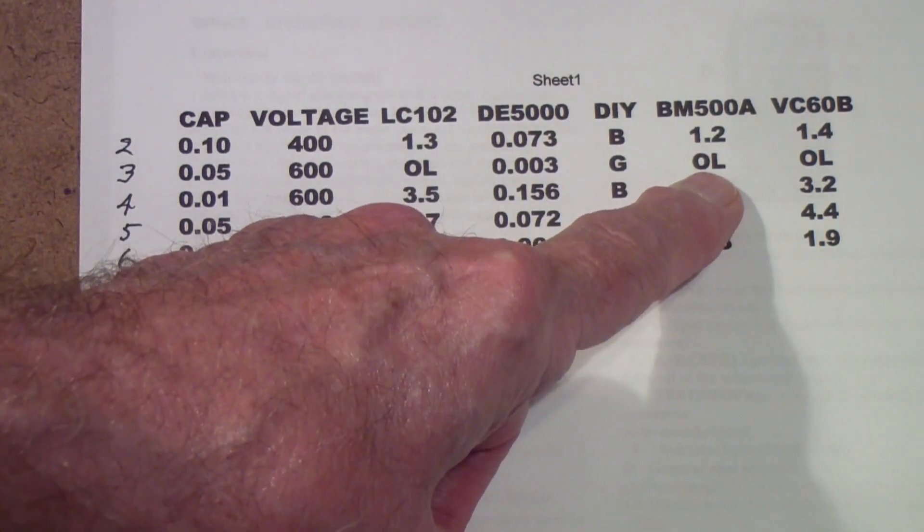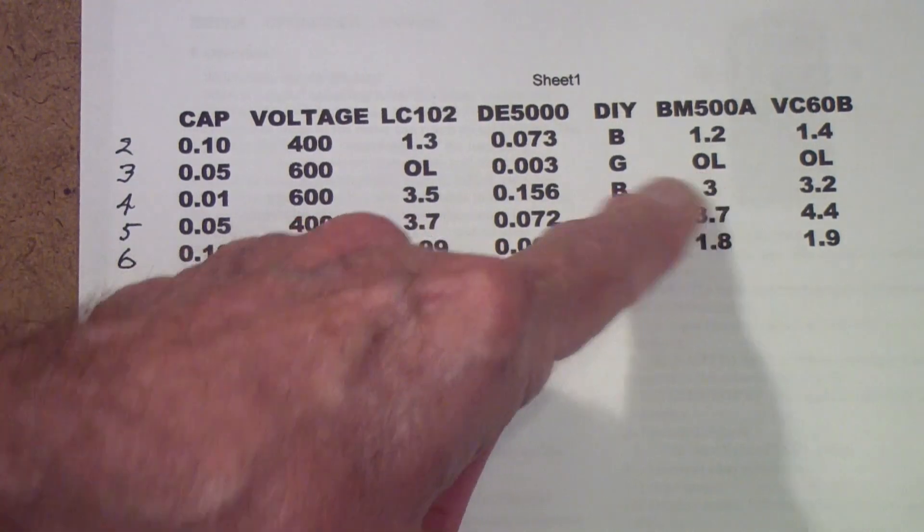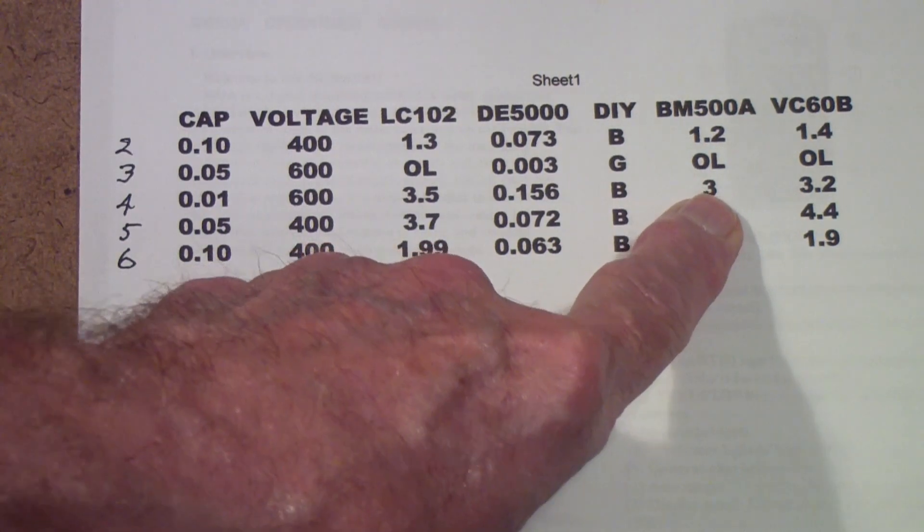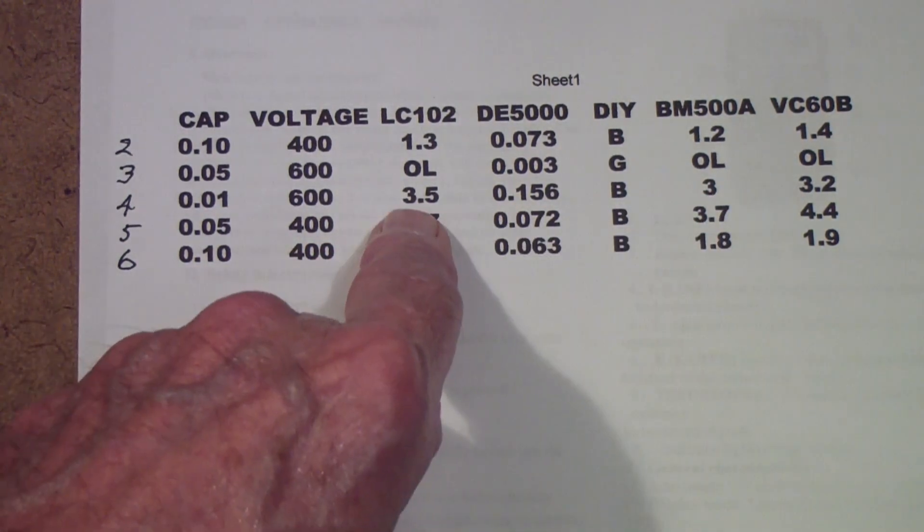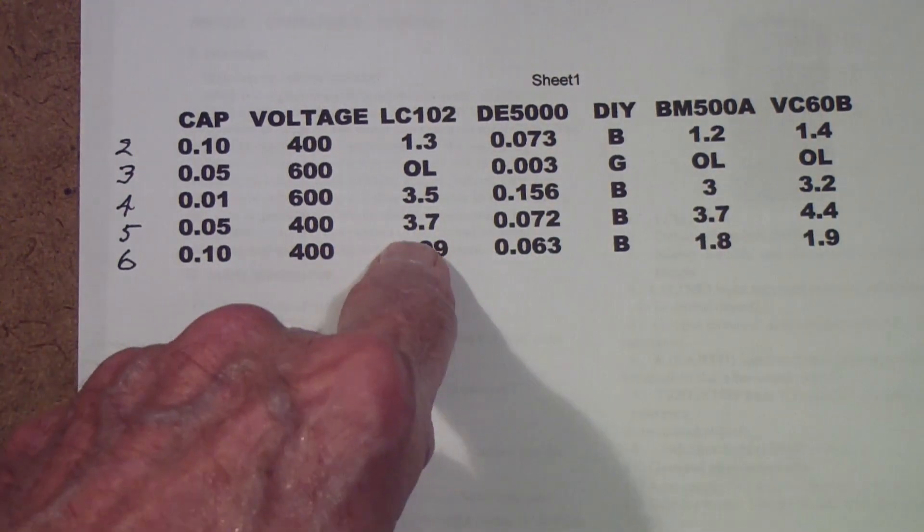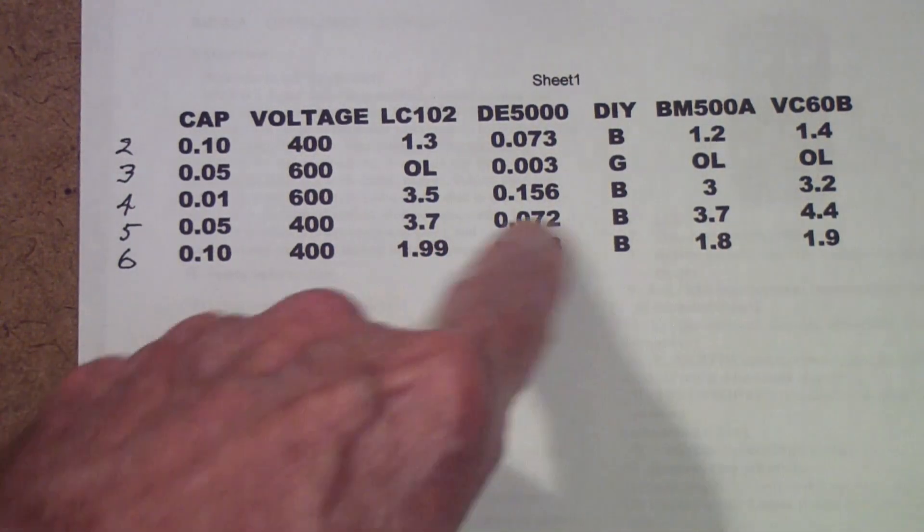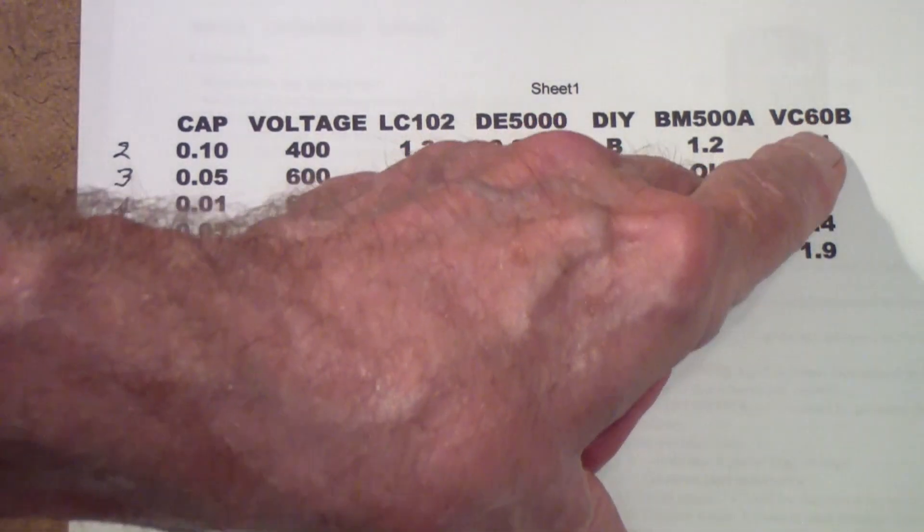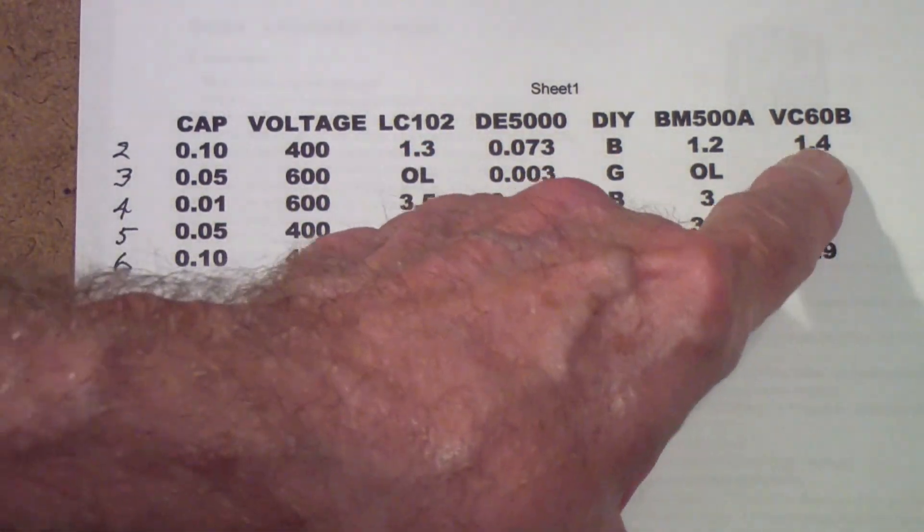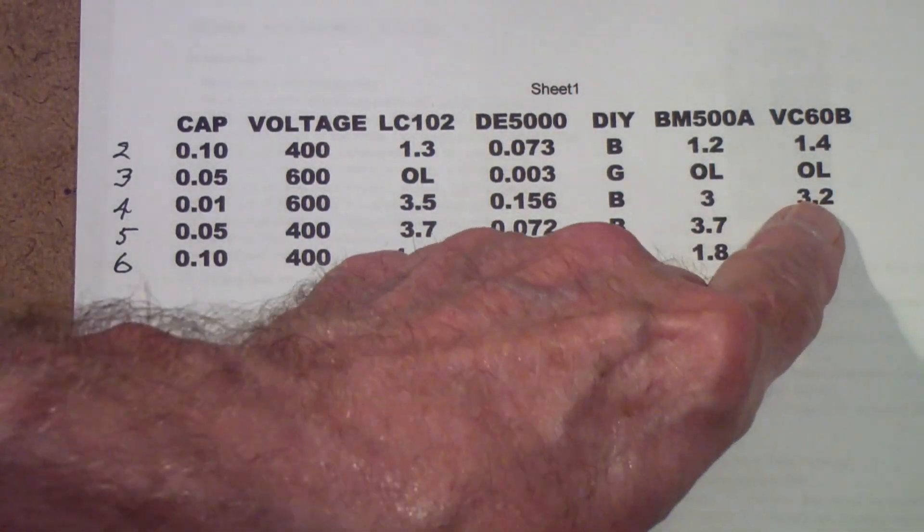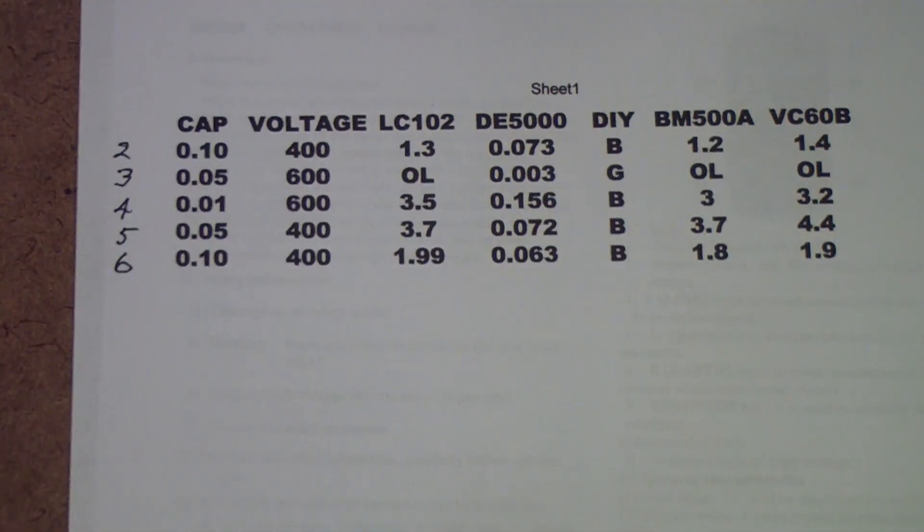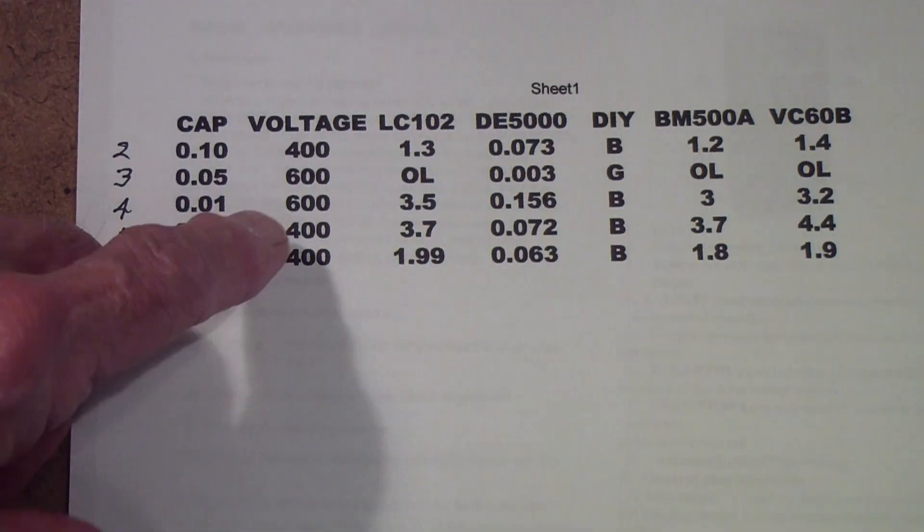Overload, which means too high to measure, which is the same as the LC102. 3 megaohms for capacitor 4 compared to 3.5, 3.7 compared to 3.7, and 1.8 compared to 1.99. Similarly, the VC60B+ measured 1.4, 3.2, 4.4, and 1.9. Now I should point out that all of these were tested at 250 volts, well within their voltage rating.